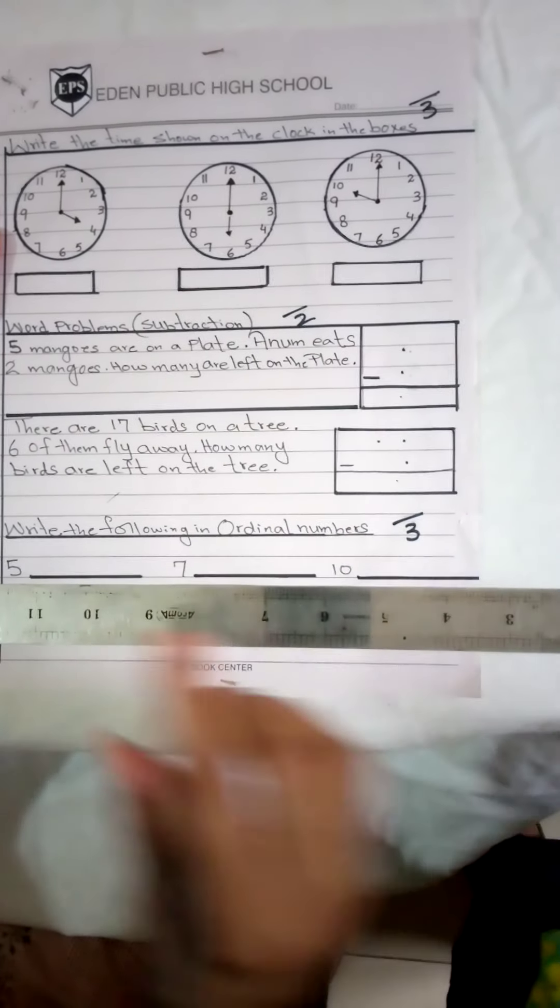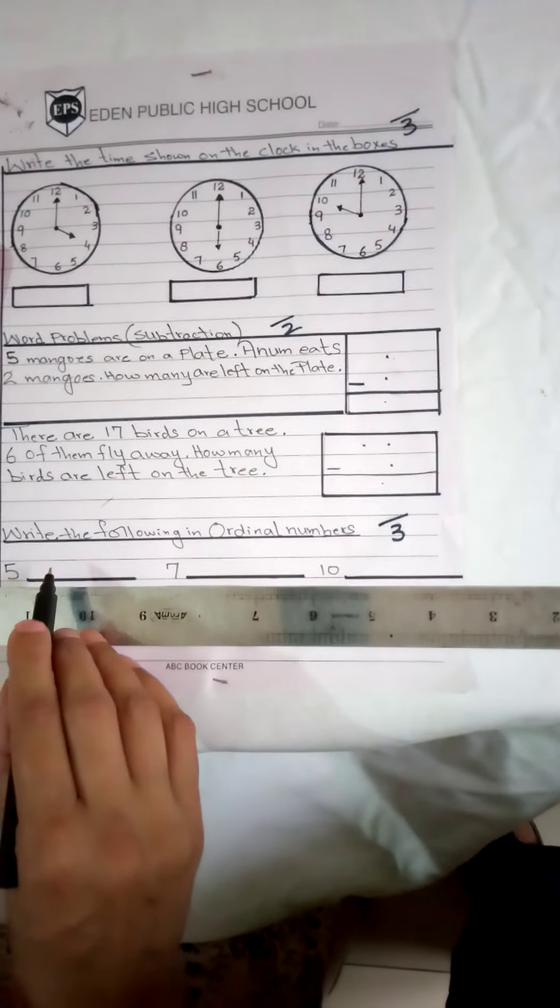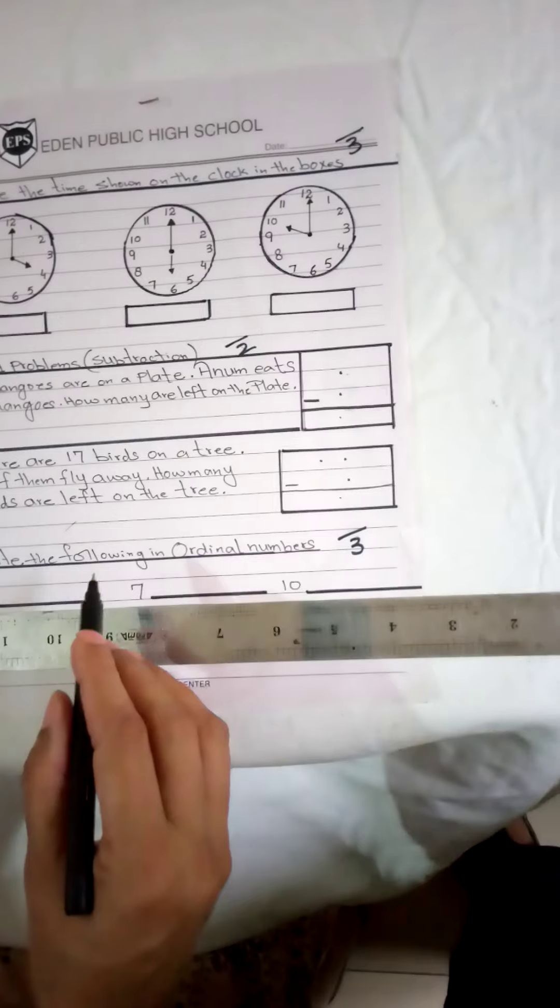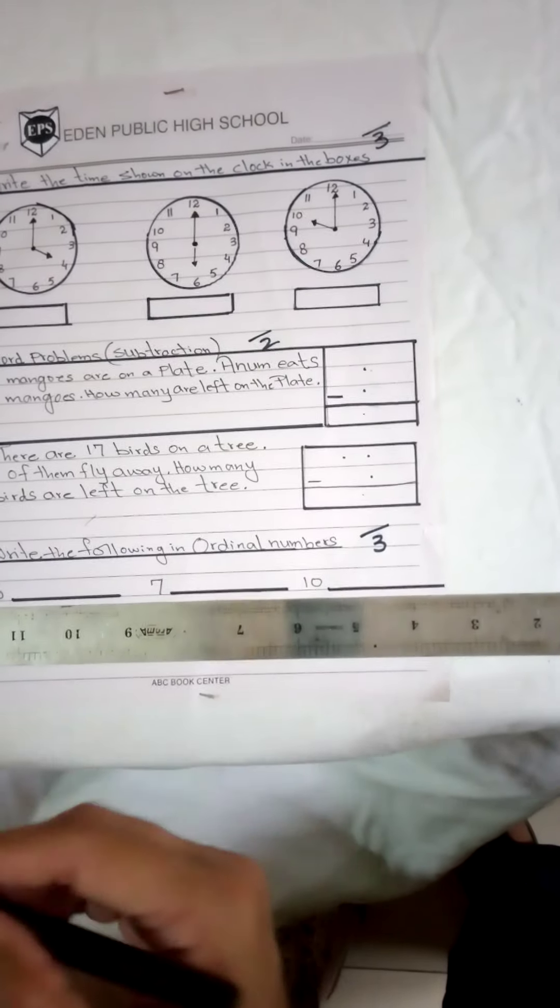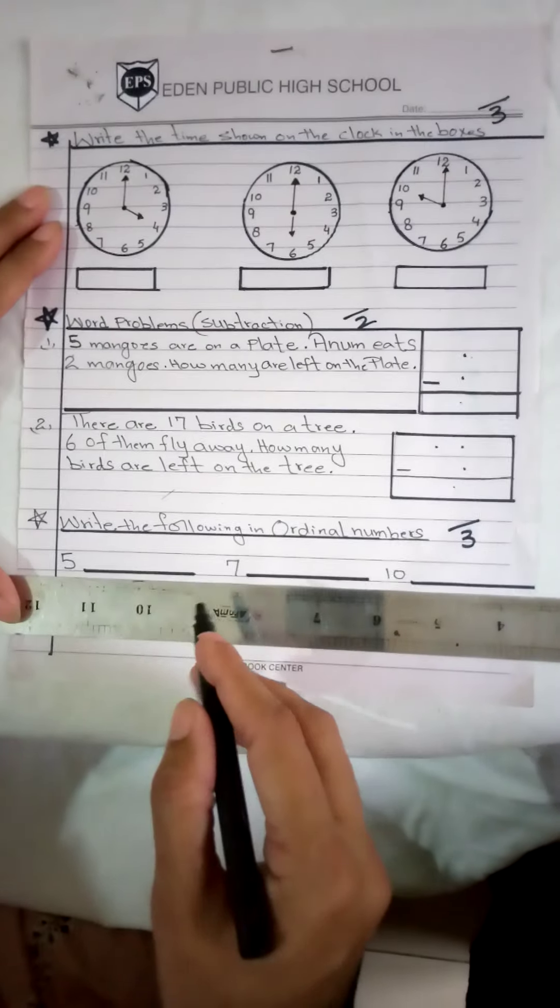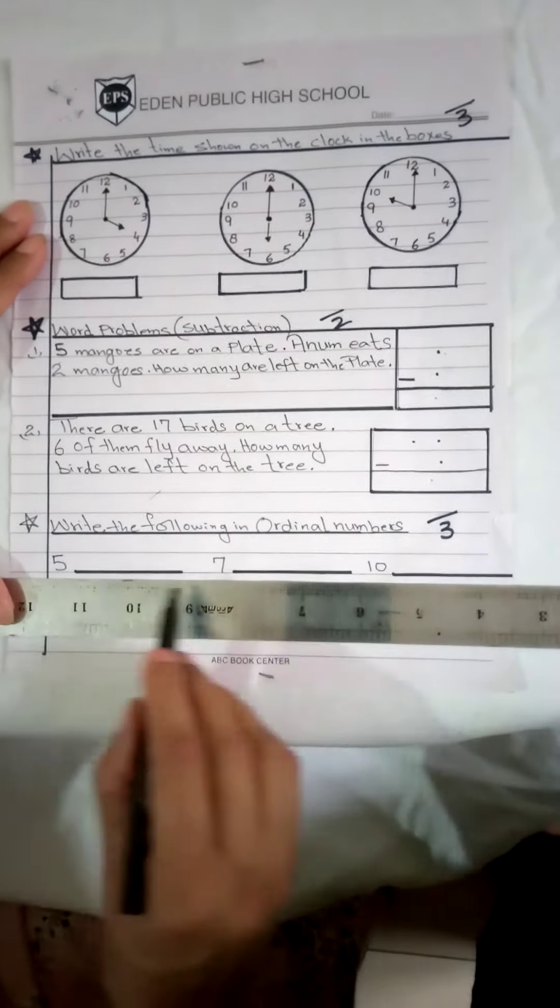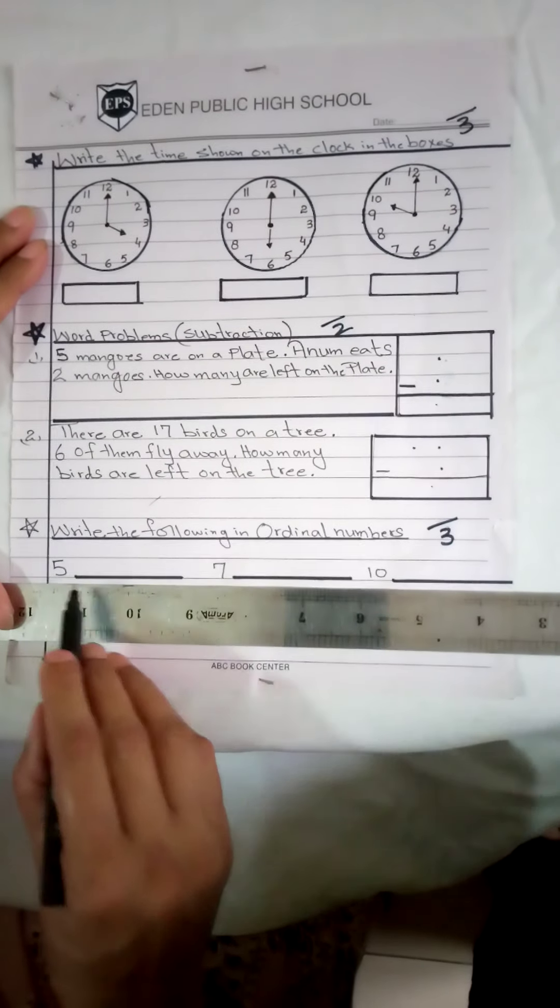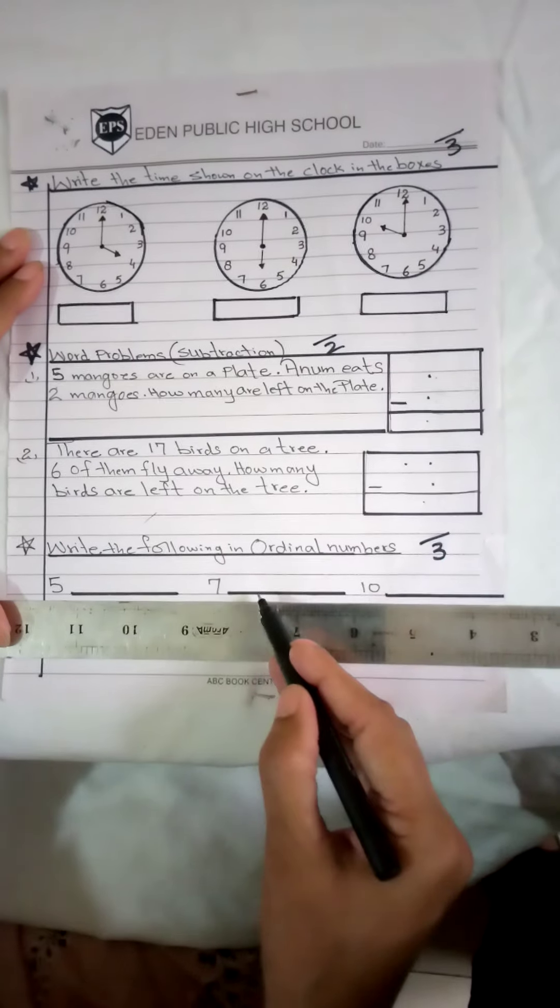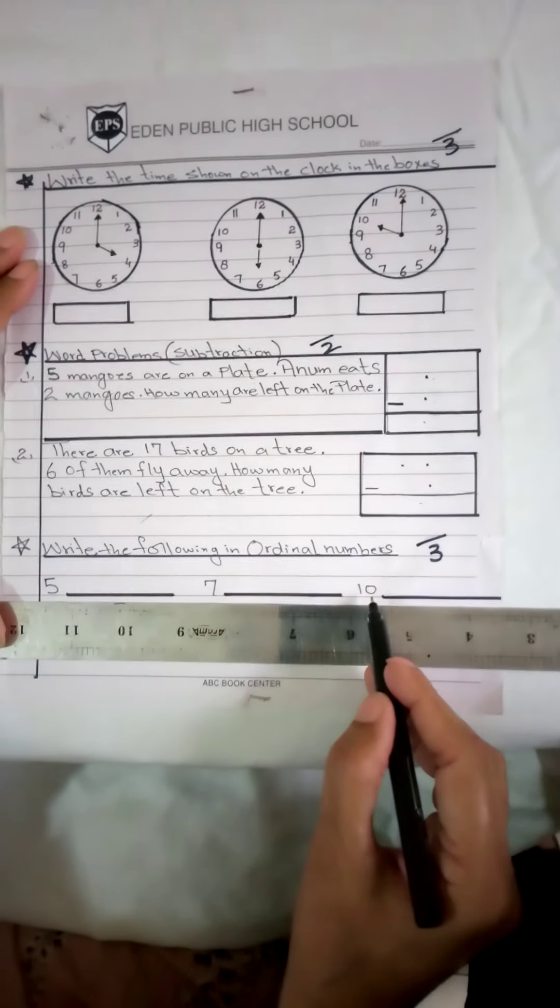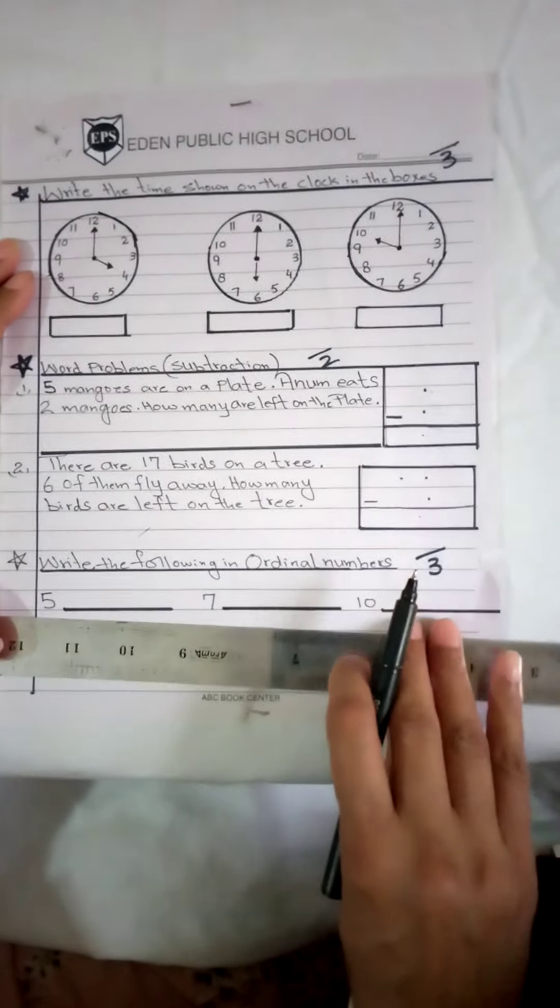Okay students, our third work is write the following in ordinal numbers. You have to write the number in figure, you have to write the number in ordinal, in which way the report is written. You will write the number in rank. First, second, how do we pronounce this? We are not saying one, two, three. We are saying first, second, third. In this way, the teacher gave us three numbers: fifth, seventh, look at which way the teacher has written. Seventh, tenth. You have to write these in ordinal numbers. Okay, this is also in the book.